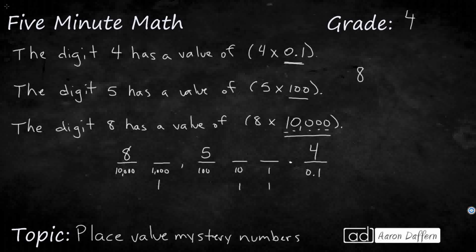Well, we could write 81,511 and 4 tenths. This is a possible answer, because look, it has a value of 4 times 1 tenth, has a value of 5 times 100, has a value of 8 times 10,000.